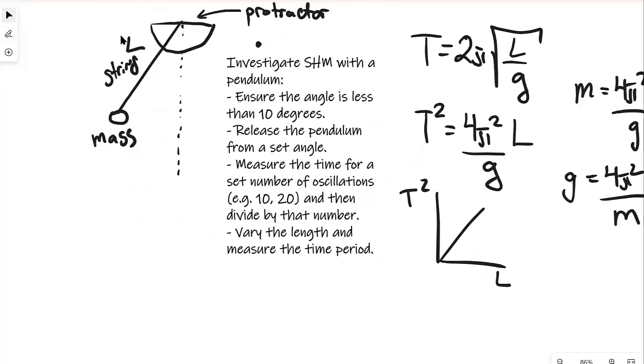So we could also investigate simple harmonic motion with a pendulum. Imagine that we have a little pendulum, a string with a mass attached to it, the length is L, and then we also have a protractor across here. We could ensure that the angle is less than 10 degrees. Remember we don't actually get simple harmonic motion if the angle is larger than 10 degrees. Then we're going to release that from that set angle. We're going to be measuring the time for a set number of oscillations, example 10 or 20, and then divide by that number, very similar to the previous question.